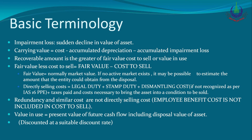Let us look at basic terminology. What is impairment loss? It is a sudden decline in the value of an asset — when an asset's value suddenly declines, we say that the asset is going to be impaired. Carrying value (CV) is cost minus accumulated depreciation. Recoverable amount is the greater of fair value less cost to sell, or value in use — whichever is greater is our recoverable amount.